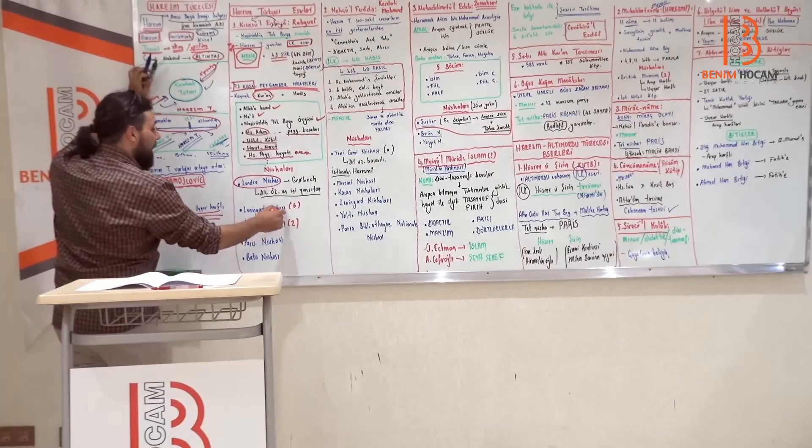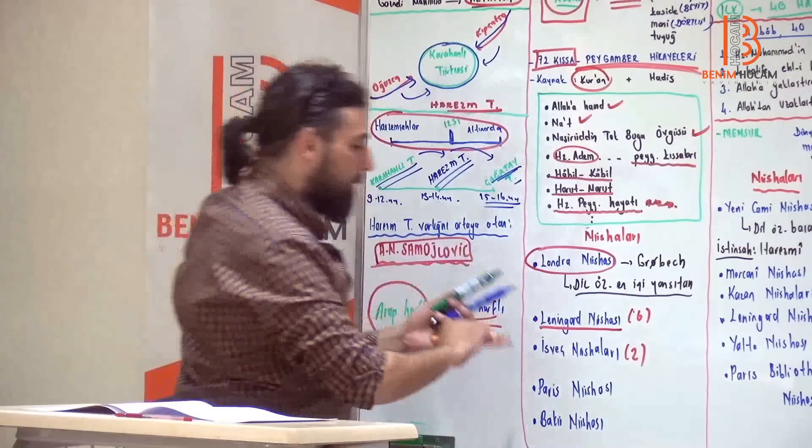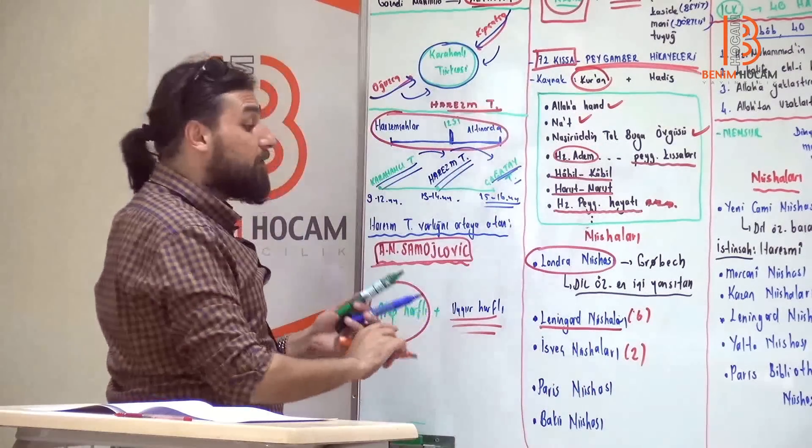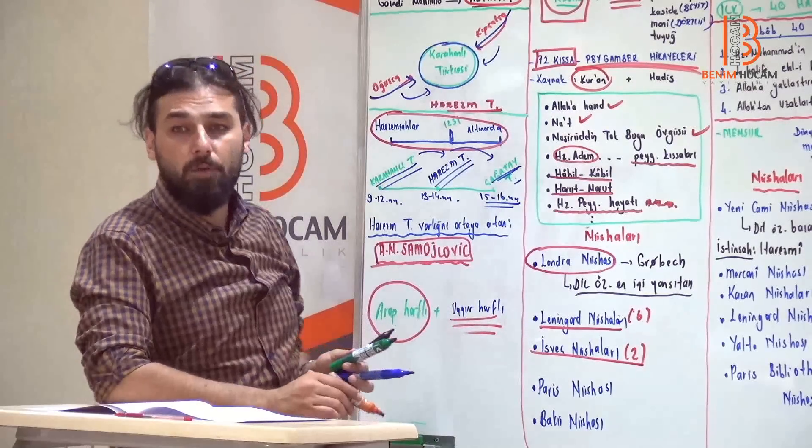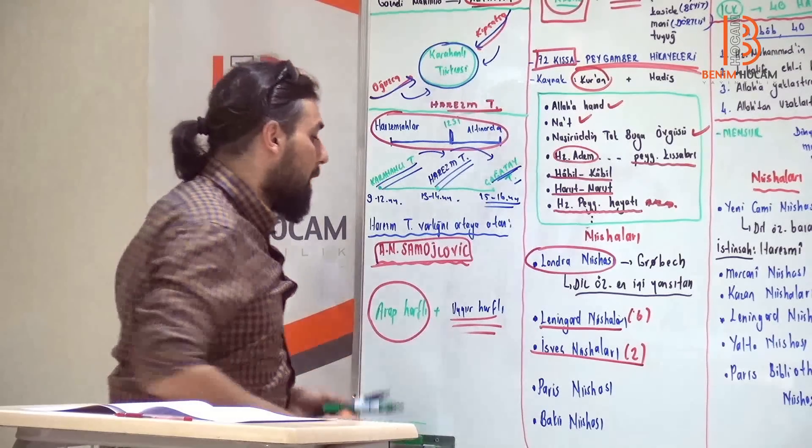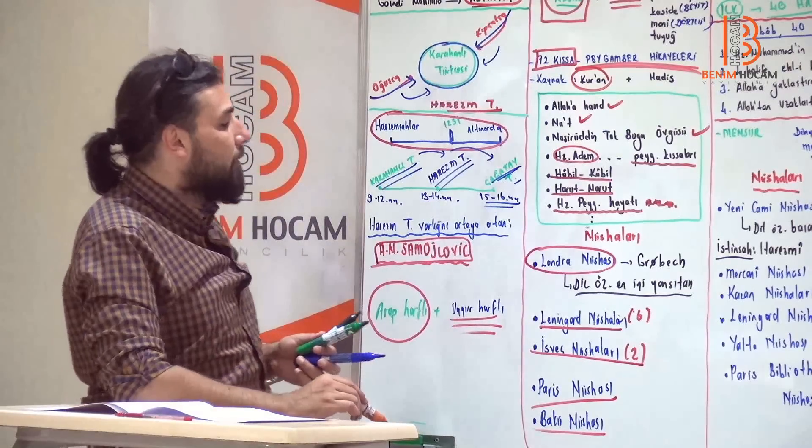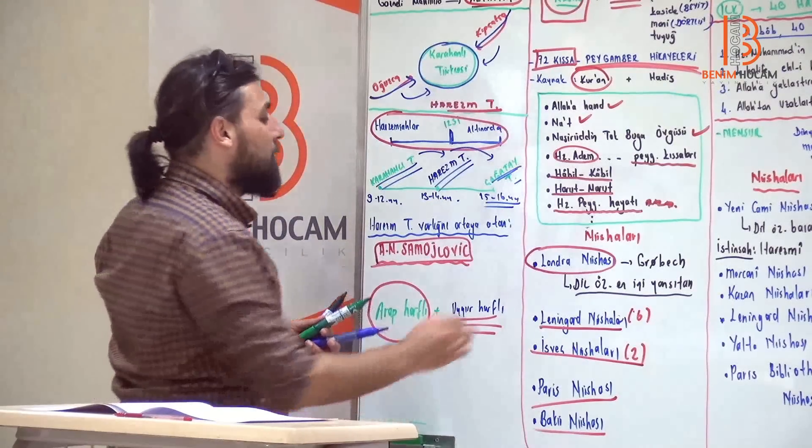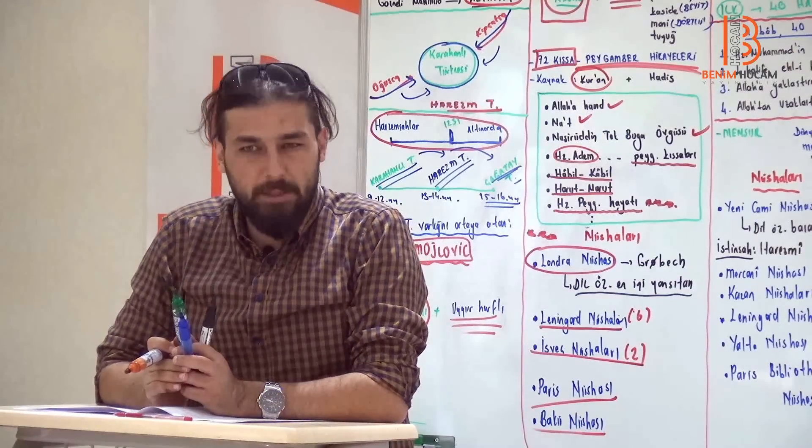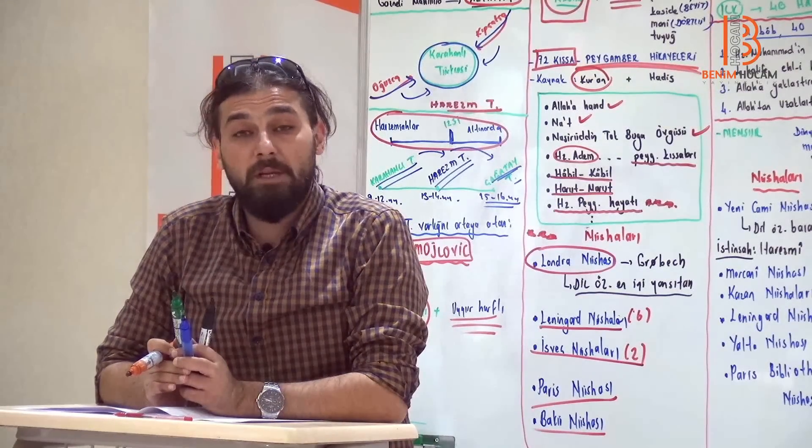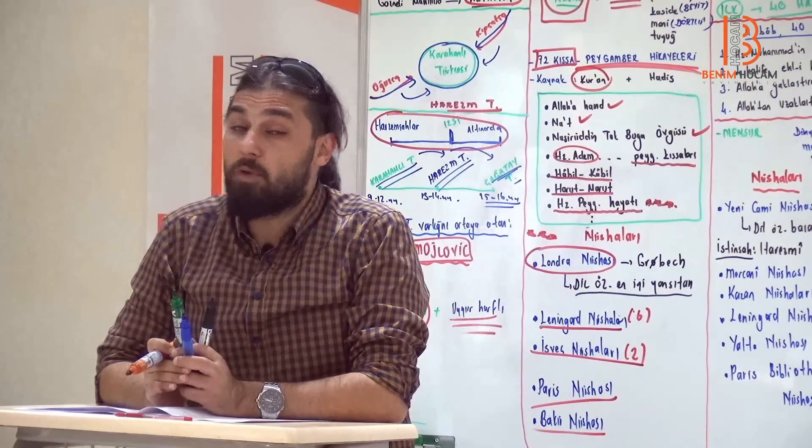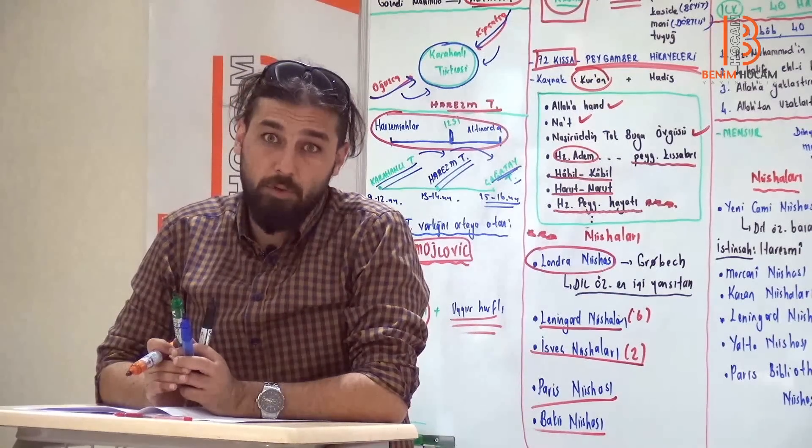Diğer Nüshalar, Leningard nüshası 6 tane, İsveç nüshalar 2 tane. Birisi arkadaşa Uppsala Üniversitesi'nde, birisi de Lantz Üniversitesi'nde 2 Nüshası var. Paris nüshası ve Bakü nüshası vardır. Ama bizim için değerli nüsha Londra nüshası. Demek ki neymiş? Kısa sül enbiya mensurmuş. İçinde peygamber hikayelerini ihtiva edermiş. Allah hamdla başlar, Naat, Nasirettin Tokbuga'yı över. Çünkü ona sunulmuştur.